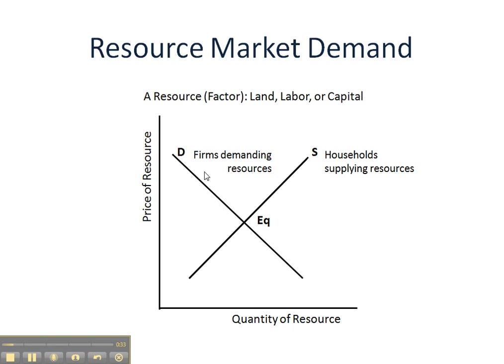If we focus in on demand, the demand curve for a resource, just like product markets, will slope downward to the right. Why does it do that?